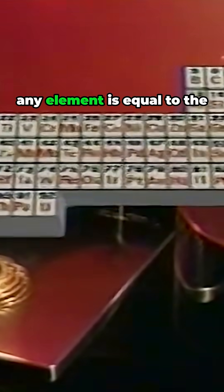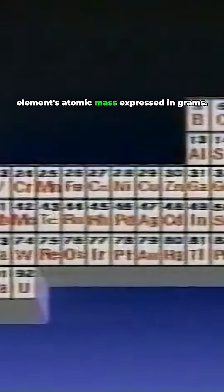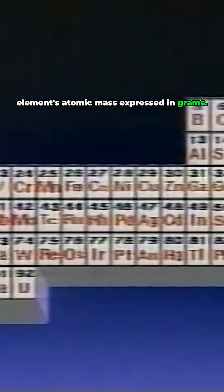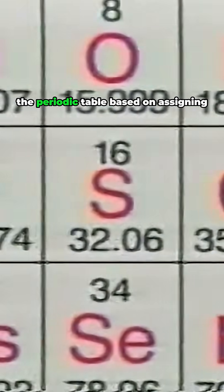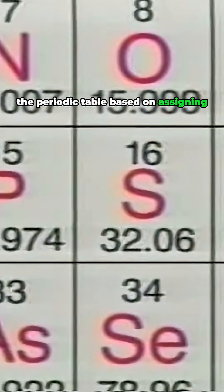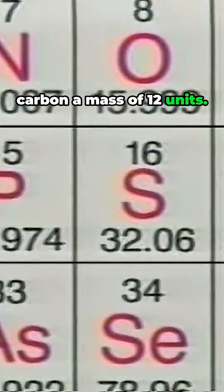The mass of a mole of any element is equal to the element's atomic mass expressed in grams. These are the relative atomic masses of the elements in the periodic table, based on assigning carbon a mass of 12 units.